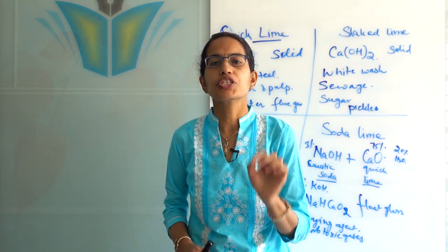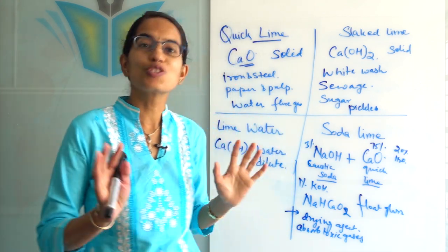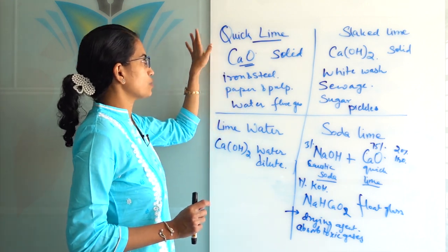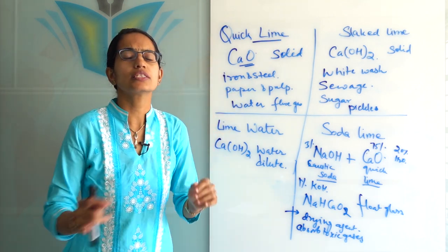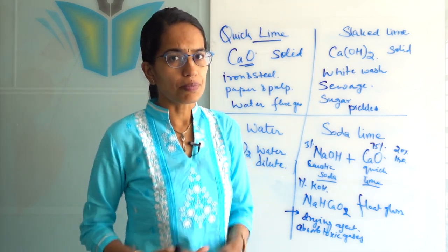To begin with quick lime. Quick lime is calcium oxide. This calcium oxide is present in a solid form. The common places where quick lime is used is in the production of iron and steel, in the production of paper and pulp industry.